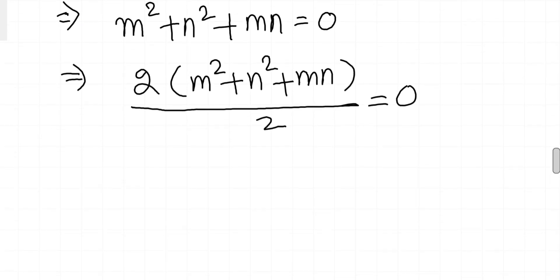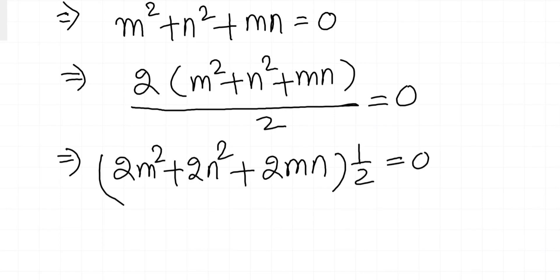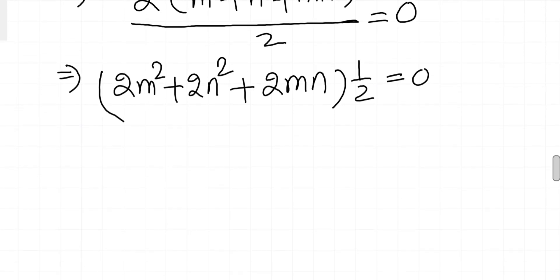If you do this, you will get 2m squared, 2n squared plus 2mn, into half equals zero. Now we have one more n squared...